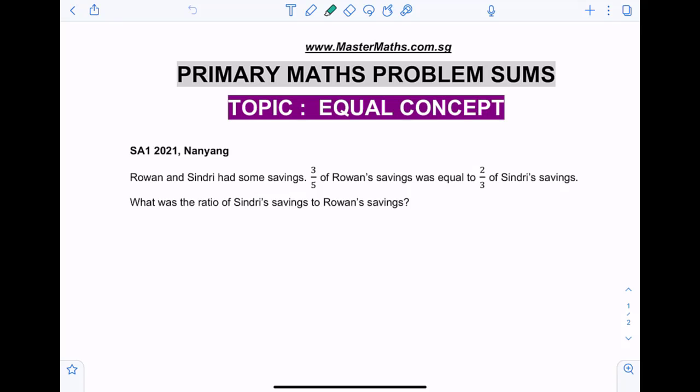Rowan and Sindri had some savings. Three-fifths of Rowan's savings was equal to two-thirds of Sindri's savings. What was the ratio of Sindri's savings to Rowan's savings?